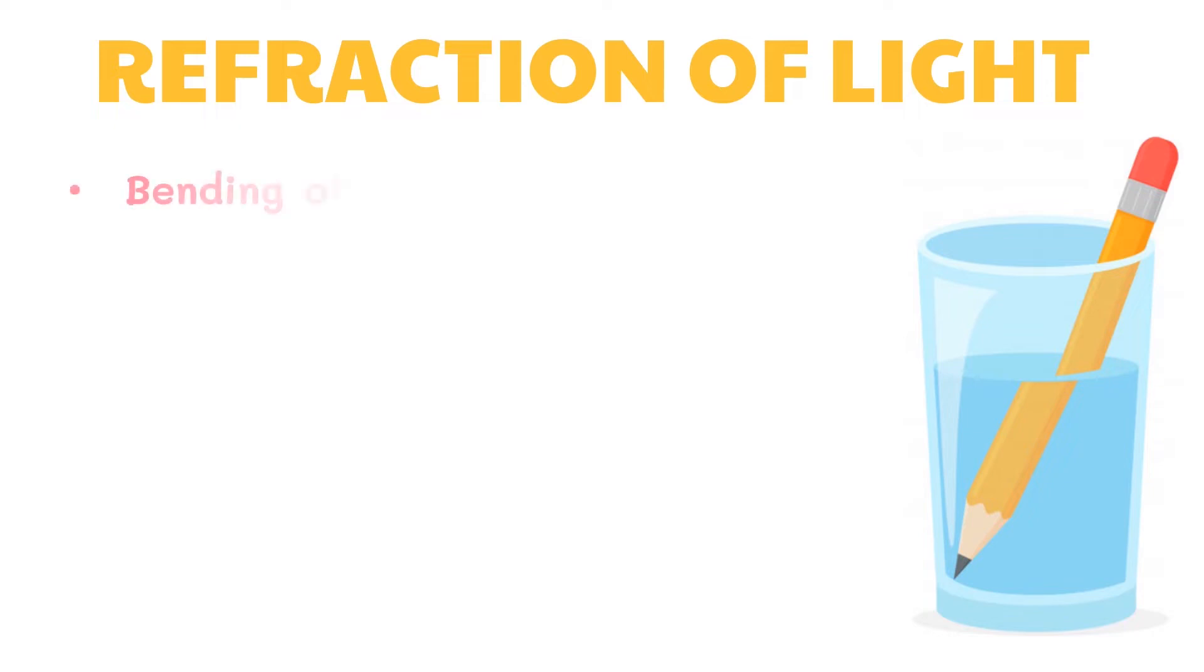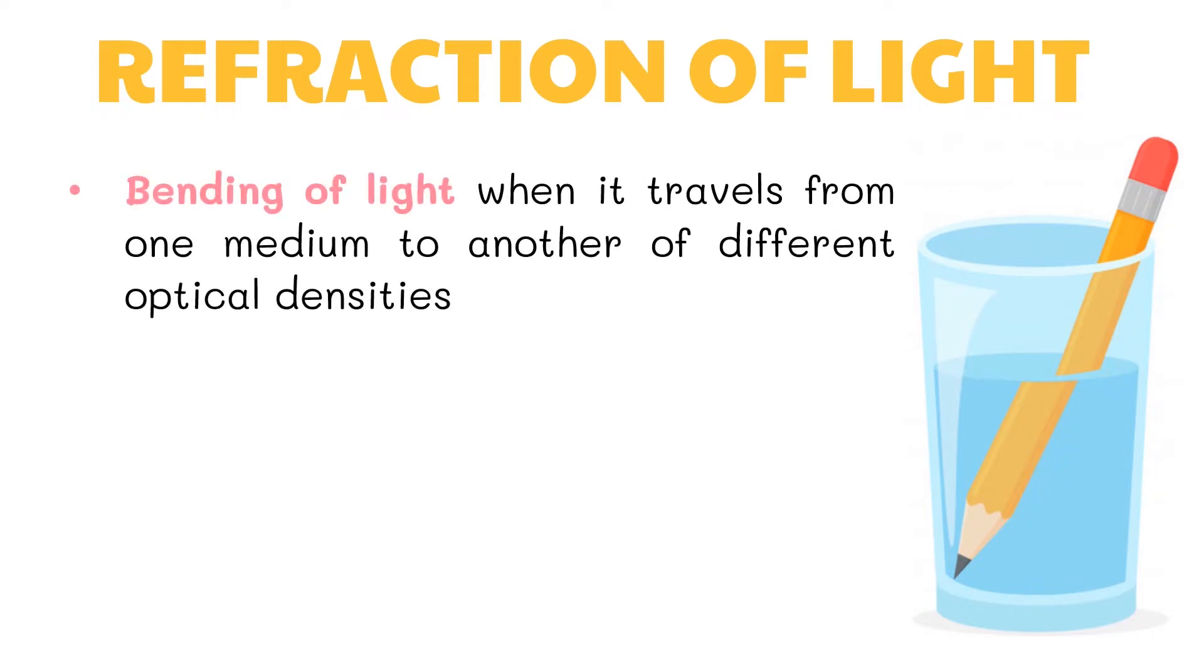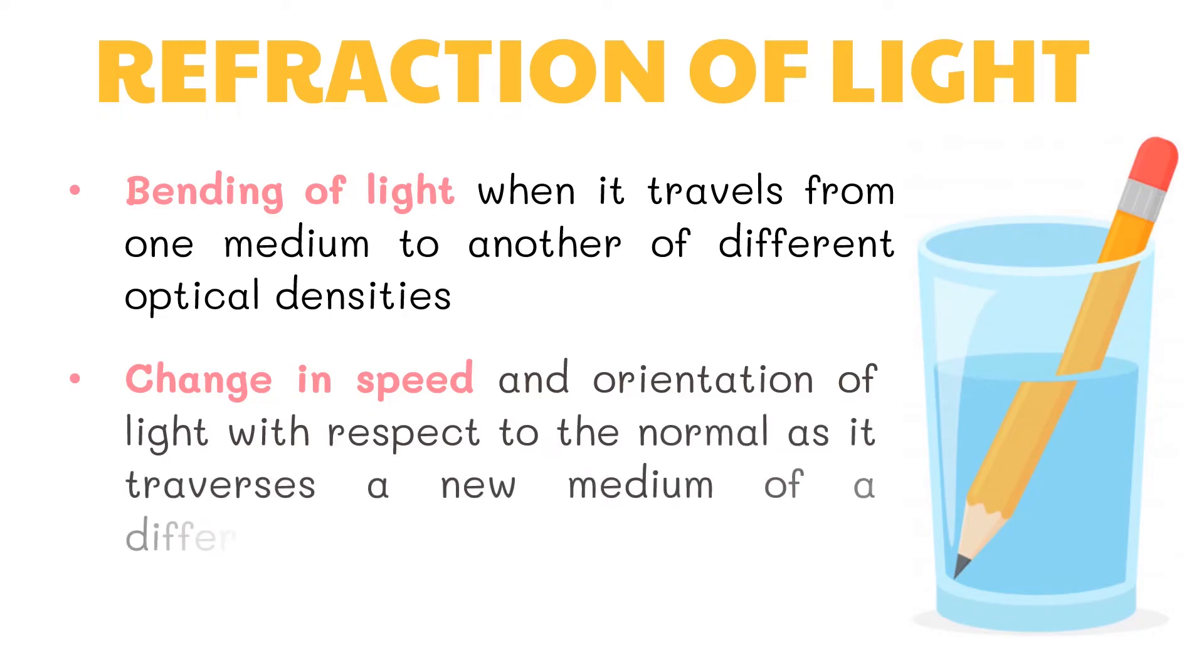Refraction is the bending of light when it travels from one medium to another of different optical densities. The pencil in the water as shown is not really broken. If we remove the water from the glass and look at the pencil, the pencil's normal appearance is not crooked. This distortion happens because of the change in speed and orientation of light with respect to the normal as it traverses a new medium of a different density.